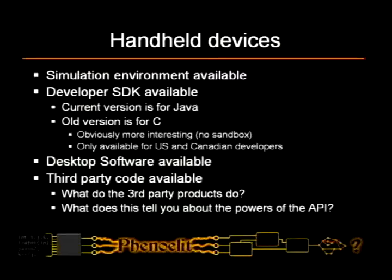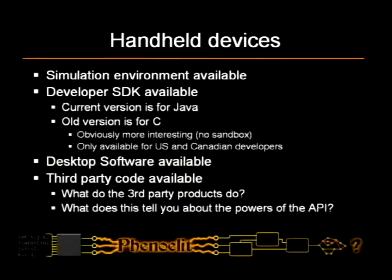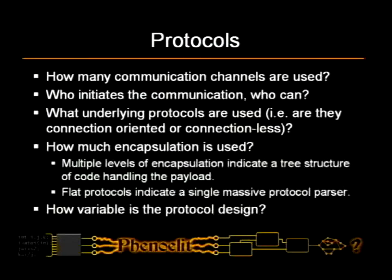You have desktop software, and you have third-party products that you can put on a BlackBerry — which is quite useful because you can take the third-party products, make more or less legal copies, and see what's in there. What API do they use? What can they do with the API? That tells you how much power you have behind the API even if you don't have documentation for it. For the protocols, it's really just firing up the sniffer and finding out how many communication channels there actually are — does it connect to 500 different systems on the internet, or is it just one?